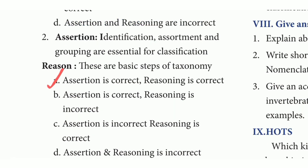Second assertion and reason question. Assertion: identification, assortment, and grouping are essential for classification. Reason: these are the basic steps of taxonomy. The answer is option A — assertion is correct and reasoning is correct.